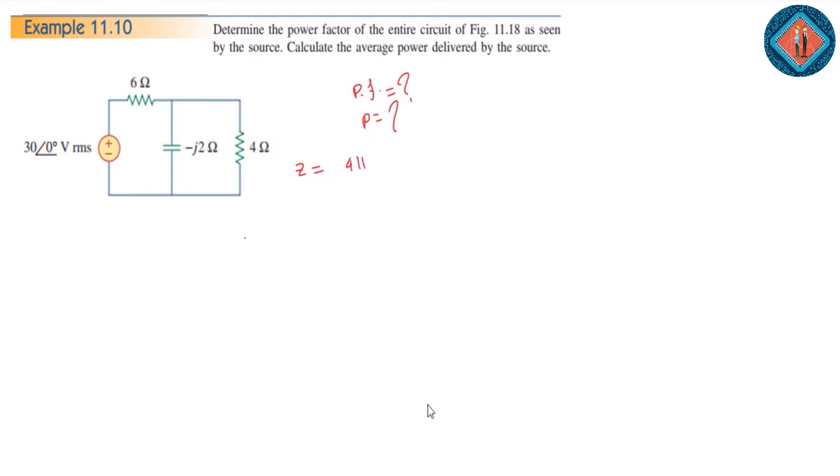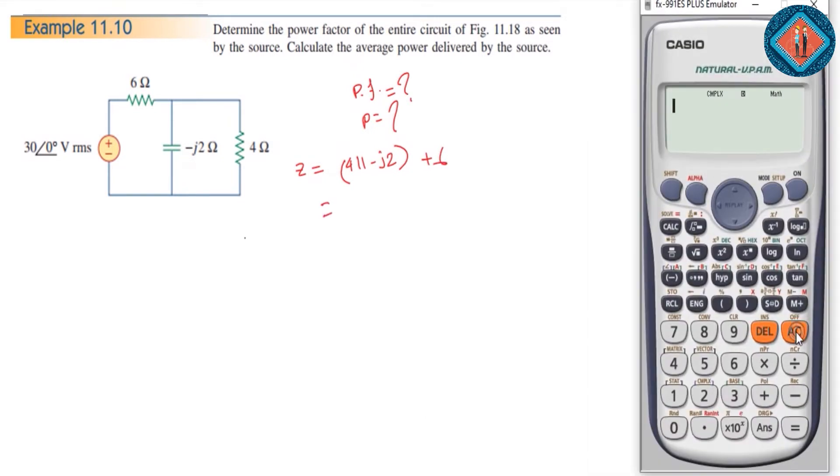The total impedance calculation gives us 4 parallel with minus j2, plus 6, which equals 6.98 at an angle minus 0.24 degrees.